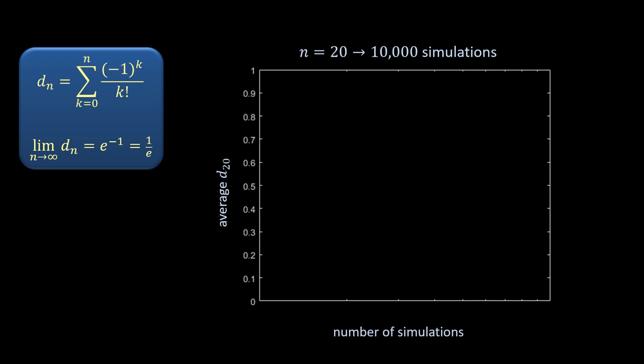For those of you seeking experimental verification of the result, here is a simulation of 10,000 random permutations for a set size of 20, large enough for the theoretical probability of a derangement to be very close to 1 over e.